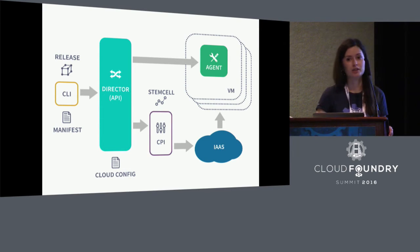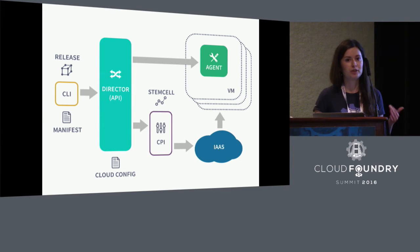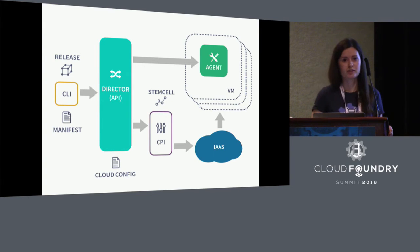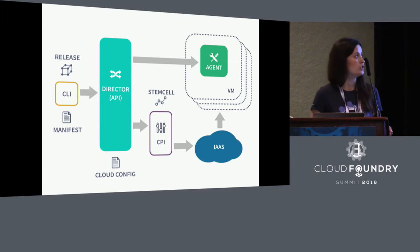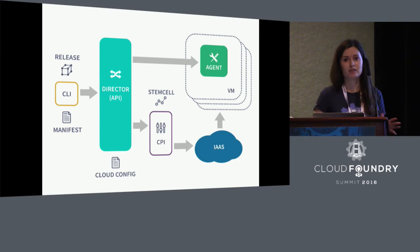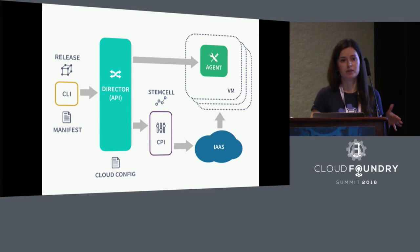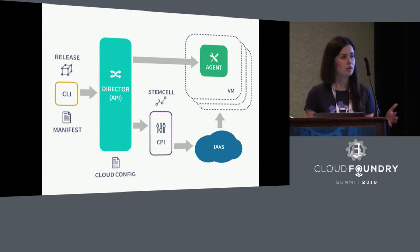Once a VM created from a stem cell boots up, the BOSH agent starts running on that VM. The agent bootstraps itself — it fetches information provided by the CPI, and that information tells the agent how to interact with the rest of the system. Once the agent is ready, it starts reporting to the Director, and the Director starts issuing commands to configure the VM — like configuring networks, setting up disks, and installing software. Agents are also responsible for supervising jobs running on that VM and performing housekeeping like rolling over debug logs and reporting resource usage.